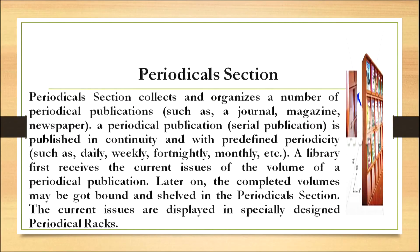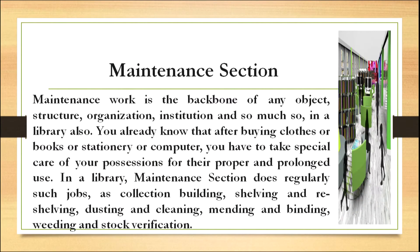The periodical section collects and organizes periodicals such as journals, magazines and newspapers. A periodical or serial publication is published in continuity with predefined periodicity — such as daily, weekly, fortnightly or monthly. A library first receives the current issue of a periodical; later, completed volumes may be bound and shelved in the periodical section. Current issues are displayed in specially designed periodical racks.